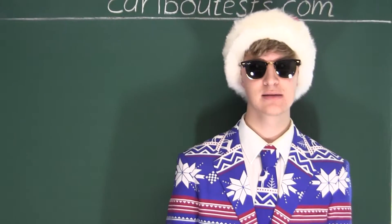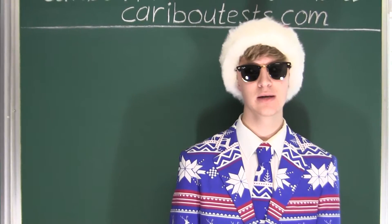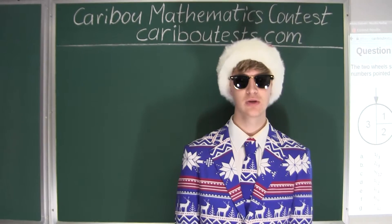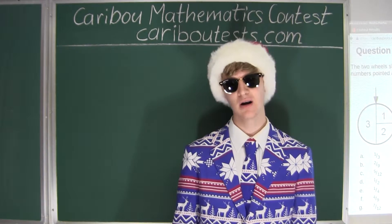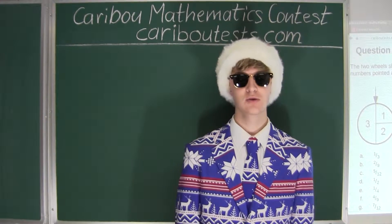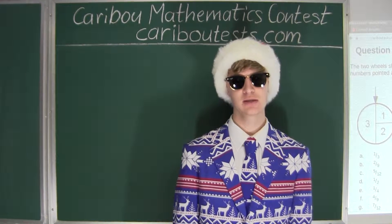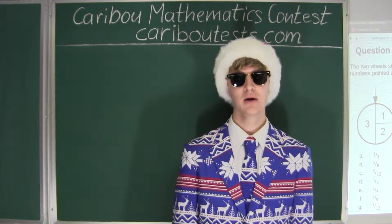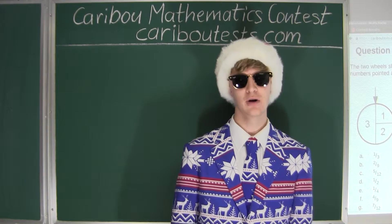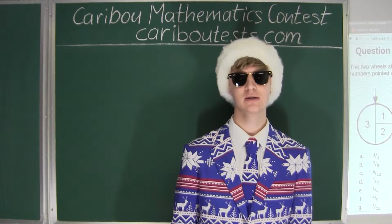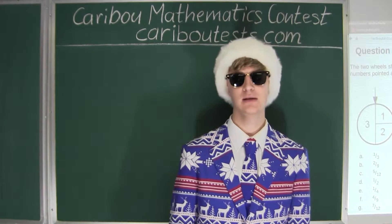If we have one number that is odd and one number that is even, then the sum of those two numbers would be odd, which is not what we want. So therefore, for two numbers to make an even sum, both numbers would have to be either both odd or both even.